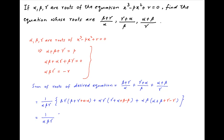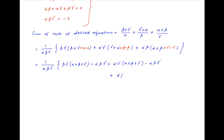The sum of the roots therefore simplifies to (1/alpha·beta·gamma) times: beta·gamma·(alpha + beta + gamma) - alpha·beta·gamma, plus alpha·gamma·(alpha + beta + gamma) - alpha·beta·gamma, plus alpha·beta·(alpha + beta + gamma) - alpha·beta·gamma.